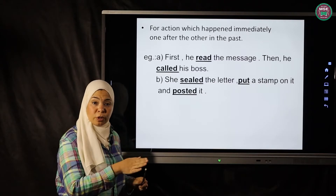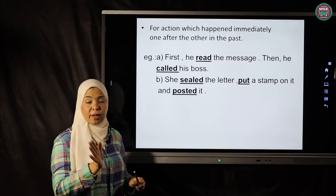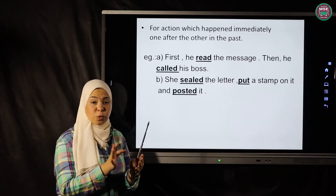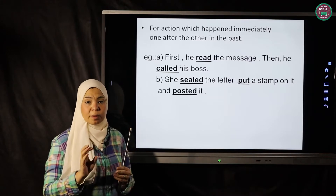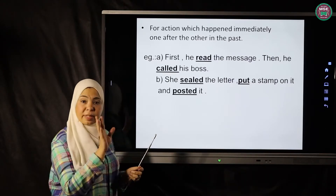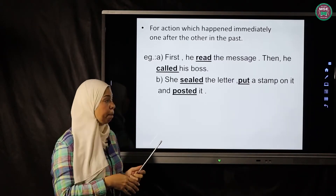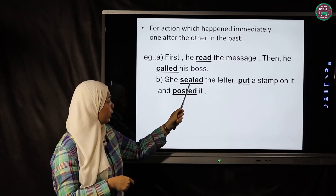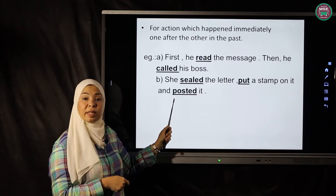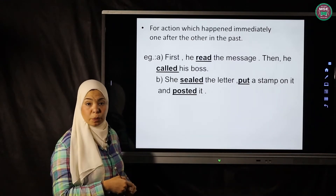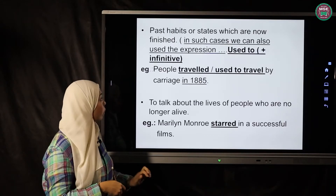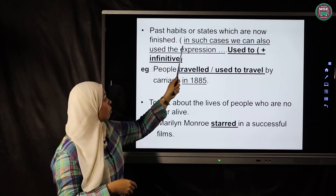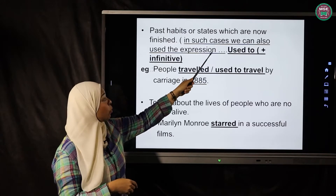That's why I put the three verbs in the past. Note that 'put' is an irregular verb — past form is also 'put', like 'cut/cut/cut' and 'shut/shut/shut'. 'Sealed' is the past form of 'seal' by adding -ed. 'Posted' is from 'post'. The third usage covers past habits or states which are now finished — anything we used to do in the past but no longer do now.